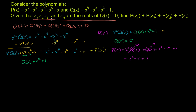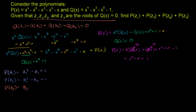Since all four zi are roots of Q(x), we can apply that same logic to each one. P(z1) equals z1 squared minus z1 plus 1. P(z2) equals z2 squared minus z2 plus 1. P(z3) equals z3 squared minus z3 plus 1. And P(z4) equals z4 squared minus z4 plus 1.